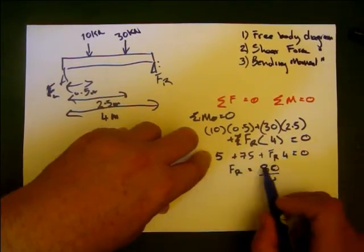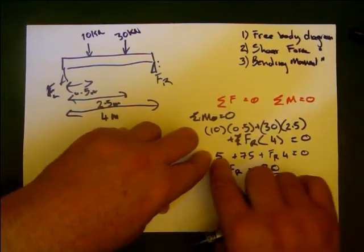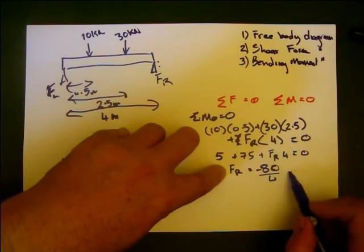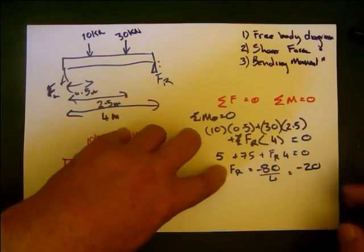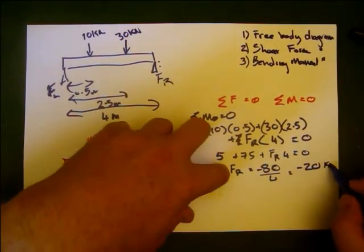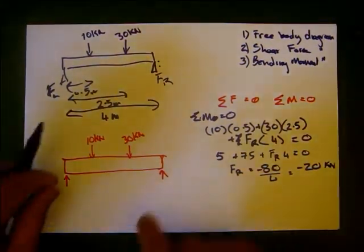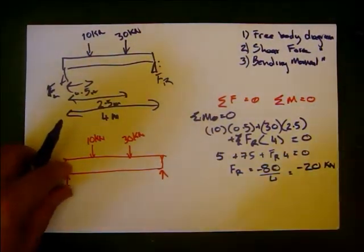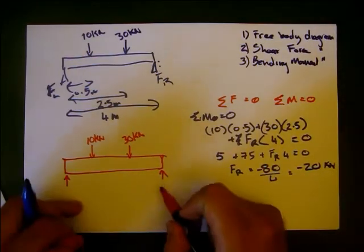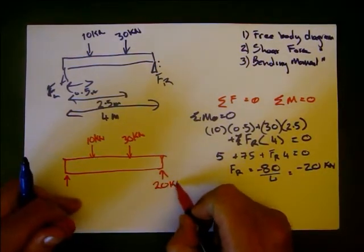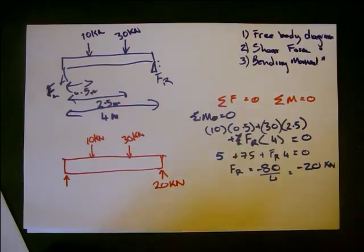So negative 80 over 4, which is equal to negative 20 kilonewtons. So what this means is at this point here there is a 20 kilonewton force acting up.